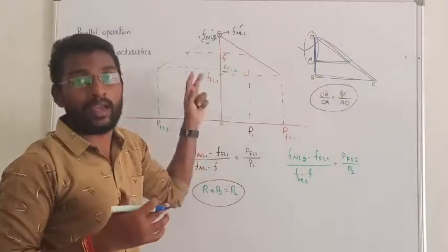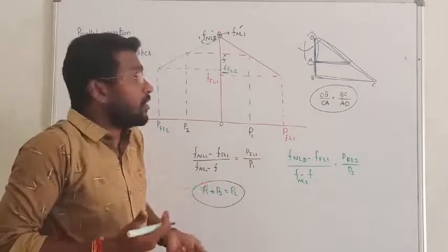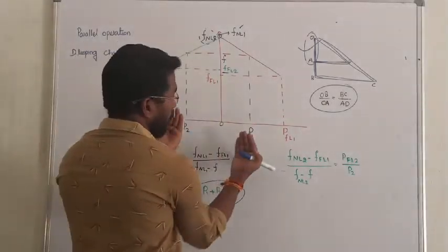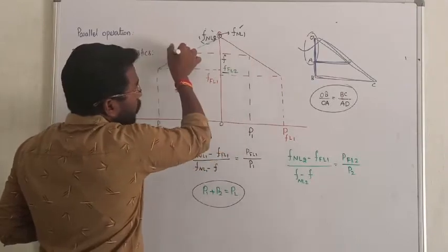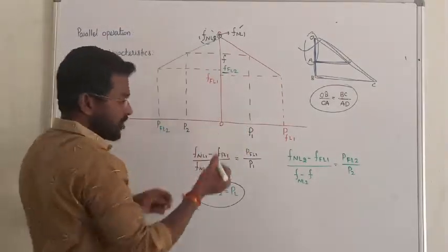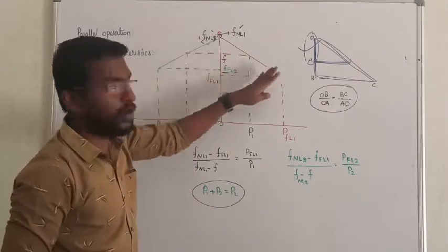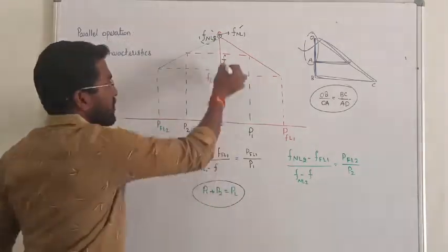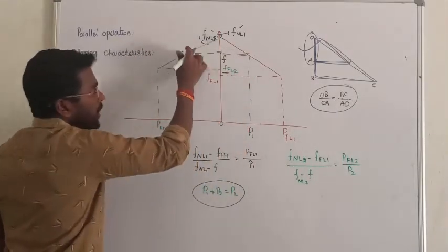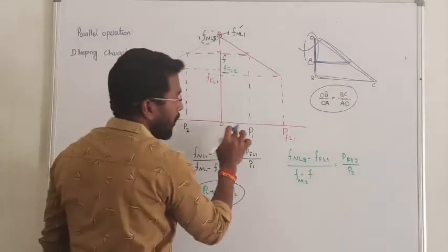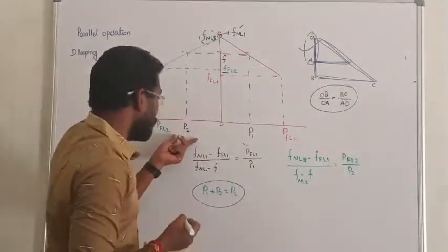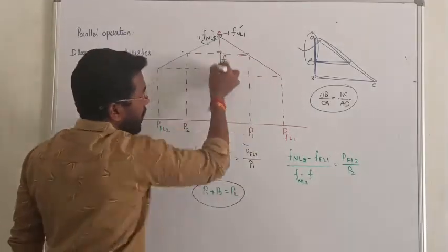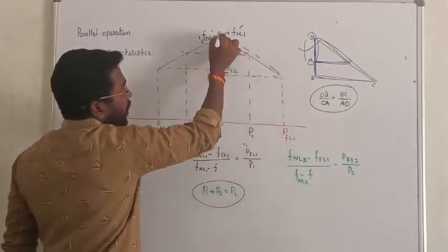Sometimes P1 and P2 are given together and you may be asked to find the corresponding frequency. We have to maintain the frequency as constant. The frequency offered by those two alternators in parallel must be the same. There is a large triangle and a smaller triangle. The power shared by alternator 1 and the power shared by alternator 2 are determined using this triangle ratio.